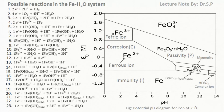The cathodic protection criterion of minus 0.85 V is used across industries to protect steel or iron assets buried in soils. The difference between this cathodic potential and the line is indicative that such a potential will also tend to electrolyze water into hydrogen.